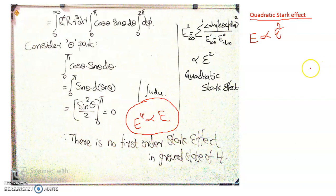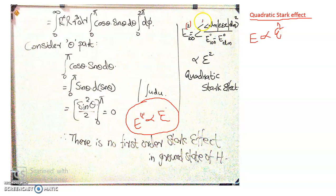In the ground state, we analyze the second-order correction in energy. The general expression for the second-order correction in energy is a summation prime over m of the scalar product of the matrix element of H-prime between states m and n, all squared, divided by E_n^0 minus E_m^0, where n must be different from m, as indicated by the prime on the summation.